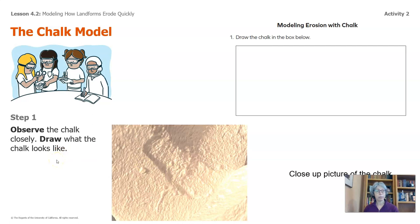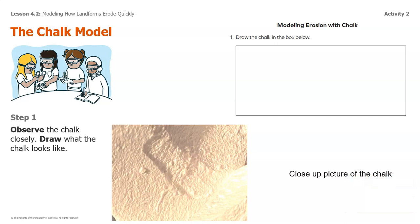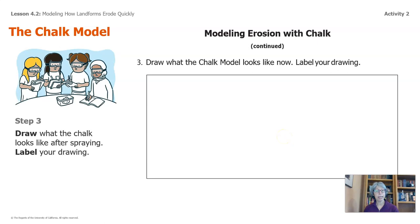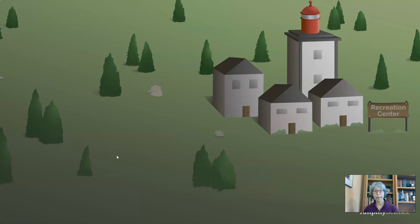First, I'd like you to observe the chalk closely and then draw what the chalk looks like, either in the packet handout or on a piece of paper. This is a closeup of the chalk. Then I will spray the chalk with water. Observe what's happening to the chalk and record your observations. Then you will draw what the chalk model looks like afterwards. Make sure you label your drawing. I'm going to pause the recording and set up the demonstration, so in the meantime, I'd like you to take this opportunity to get yourself ready.